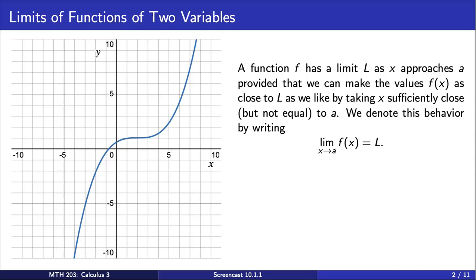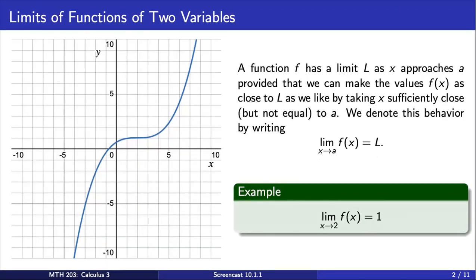For example, consider the limit of the function f pictured to the left as x approaches 2. We say this limit equals 1 because we can make the values of f(x) as close to 1 as we'd like by taking x sufficiently close but not equal to 2.